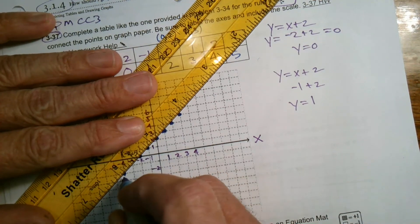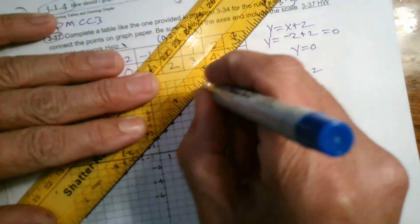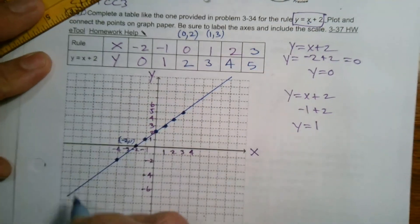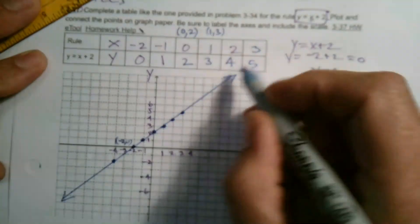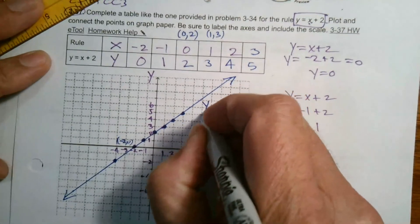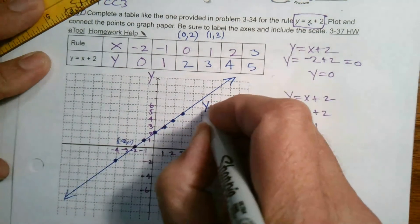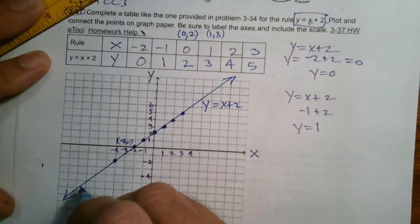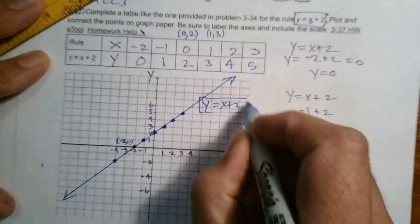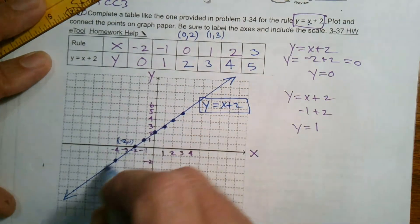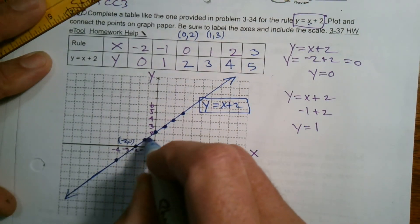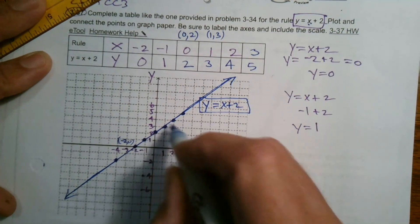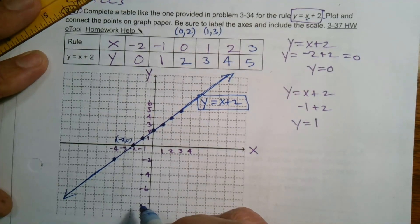So what we do is, because that pattern continues, I connect those dots with a solid line to show that this rule, y equals x plus 2, is this pattern of solutions. And so I then label that line y equals x plus 2, because that line represents all the solutions to this equation. That's why we graph a line. We graph a line to show the solutions to a rule. So that line is all the solutions to that rule. All right, there you go.